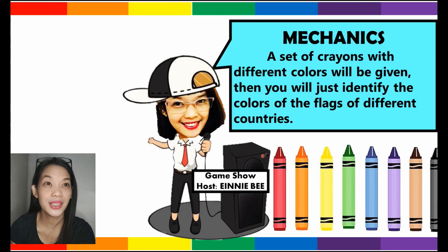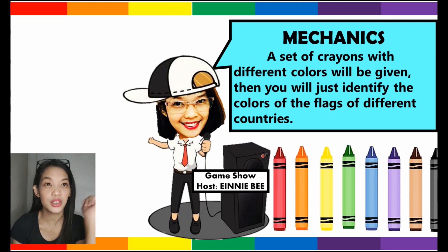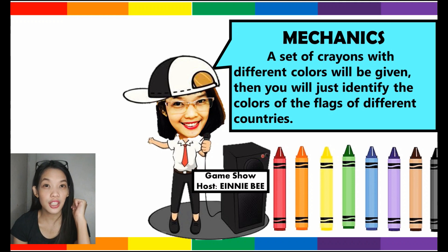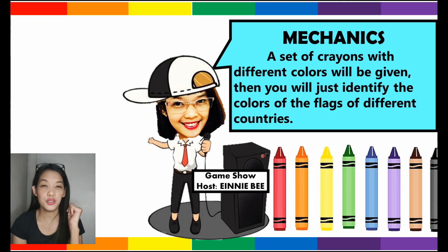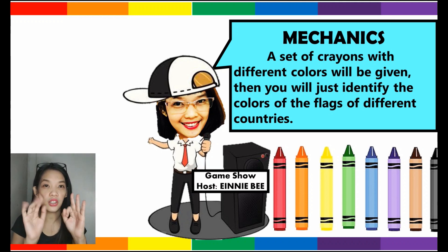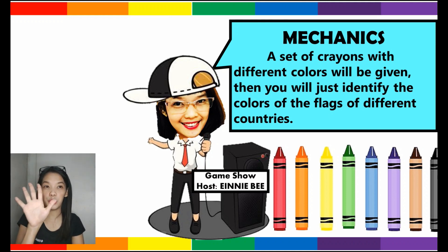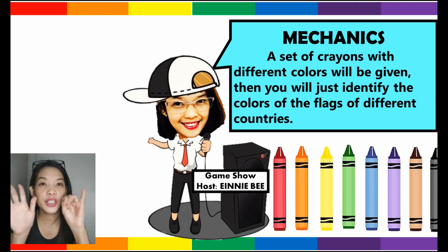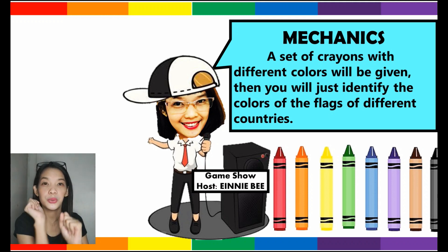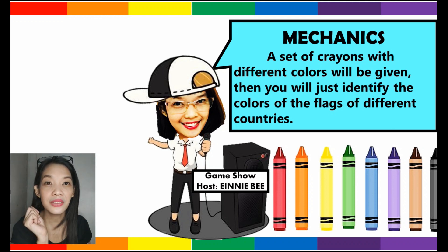So let me read the mechanics. A set of crayons with different colors will be given. Then you will just identify the colors of the flags of different countries. So as you observe, we have eight different colors: red, orange, yellow, green, blue, violet, brown, and black. So you will identify the colors of the given flag.